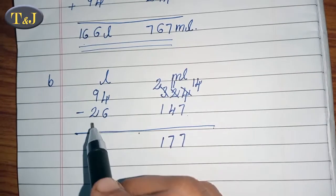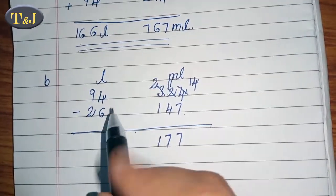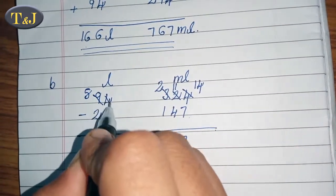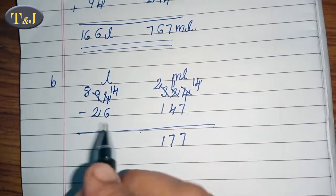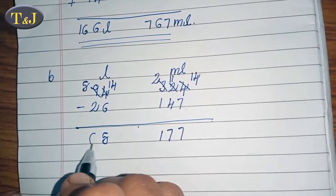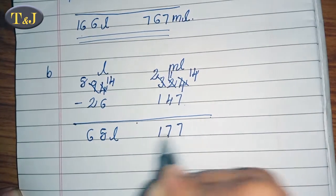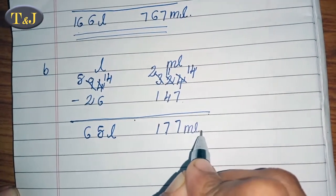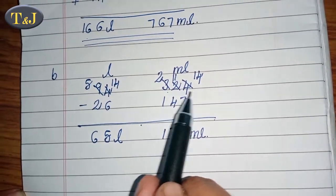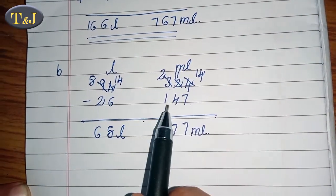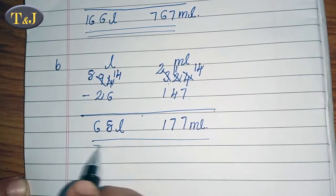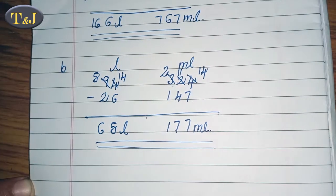Since 4 minus 6 is not possible, we borrow 1, making the numbers 8 and 14. Then 14 minus 6 equals 8, and 8 minus 2 equals 6. So we got the answer: 68 liter 177 milliliter. So 94 liter 324 milliliter minus 26 liter 147 milliliter equals 68 liter 177 milliliter.